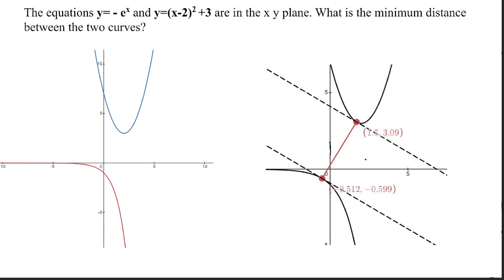The x1 value is negative 0.512, the x2 value is 1.7, and the two y values are negative 0.599 and 3.09, giving a distance of 4.302 units. Thanks for watching — this is a very interesting problem. Feel free to try out this method with functions of your own and let us know how it goes in the comments.